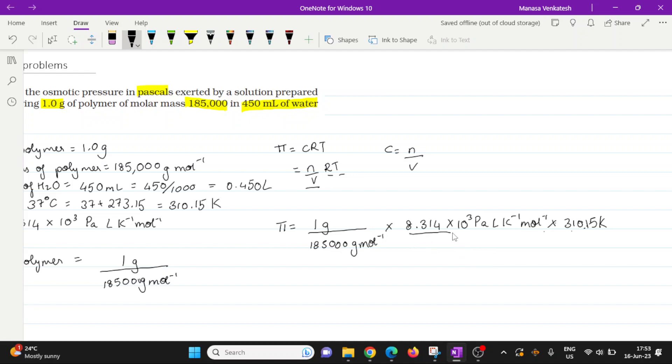Okay, and then this complete thing is going to be divided by the volume, that is 0.450 liters. Let's start with the easiest one, the units, obviously. We should be left with just pascal. So per mole, per mole gets cancelled. Liter, per liter gets cancelled. Kelvin, per kelvin gets cancelled. So you're left with just the units of pressure, which is pascal. So that's just the only thing left, which is good.